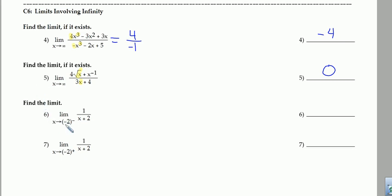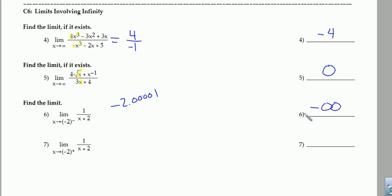Number 6: we're going to try to insert a negative 2 from the left. A number from the left of negative 2 would be something like negative 2.00001. If I put that in, I'm going to get a really small negative number in the denominator. So if I take 1 and divide by a really small negative number, it's going to give me a huge negative number. The closer we get to negative 2, the closer we get to negative infinity.